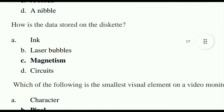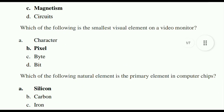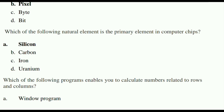How is data stored on the diskette? The answer is magnetism. The third question: which of the following is the smallest visual element on a video monitor? That is a pixel. Which of the following natural element is the primary element in computer chips? That is silicon.